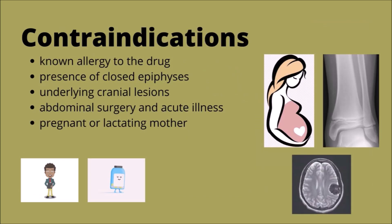Somatropin is contraindicated with any known allergy to the drug or its ingredients, to avoid hypersensitivity reactions. It is also contraindicated in the presence of closed epiphysis or underlying cranial lesions because of the risk of serious complications. This drug is also contraindicated in patients who underwent abdominal surgery or acute illness secondary to complications of open heart surgery because of potential problems with healing. It should be used with caution in pregnancy and lactation due to potential adverse effects on the fetus.